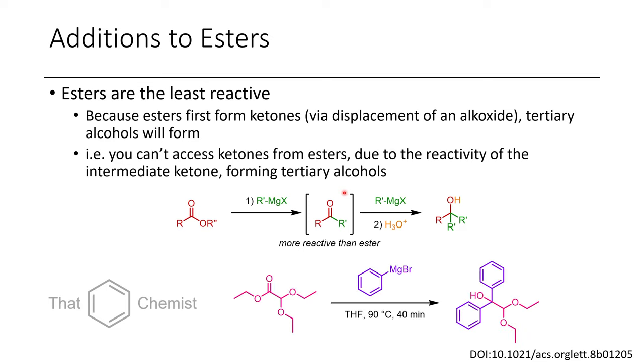But first, let's talk about this example that I found in the literature. Here we have this ethyl ester with a free diethyl acetal. The Grignard reagent selectively displaces the alkoxy group of the ester, but then a second equivalent adds forming this tertiary alcohol. They then deprotect this and convert it into an aldehyde in subsequent steps. But as this isn't the focus of today's lecture, I'm going to continue.